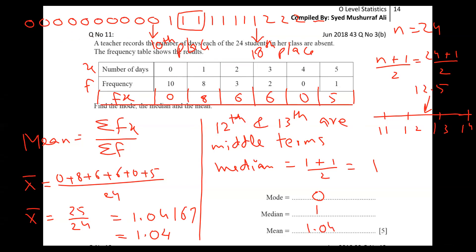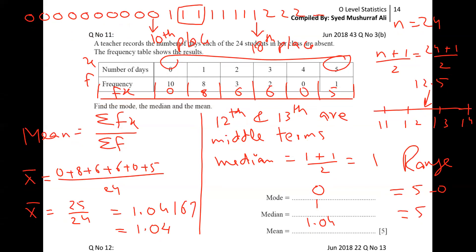I got the answer, alhamdulillah. I hope the concept is clear. At the same time, I'll tell you about range also - sometimes he asks range. What is the range? Highest value minus lowest value. Highest value is 5 and 0 is the lowest, and 5 minus 0 is called range. So we can find range as well, the same criteria. I think the idea is very, very clear.